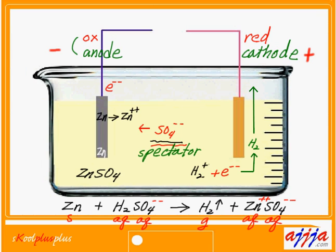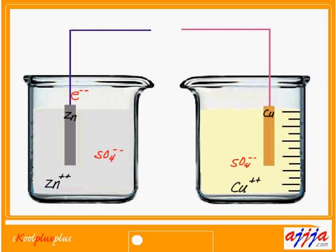Another problem: we use zinc sulfate for the zinc side. But what about the copper side? That's the problem — so the right-hand side uses copper (Cu), and we're going to use copper sulfate. Oxidation is going on on the left-hand side, but these electrons have nowhere to go. We connect the two sides. But we also have extra anions left over here — sulfate anions — and we need to send them away. That's why we need a bridge.